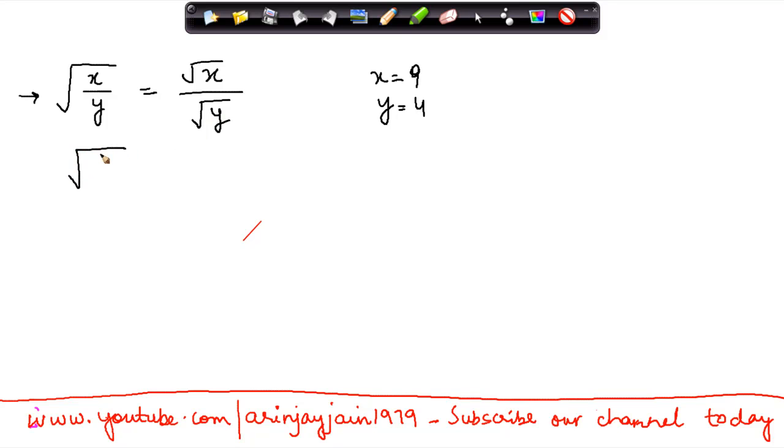So under root of 9 divided by 4 should be equal to under root of 4—sorry, my mistake—under root of 9 divided by under root of 4.